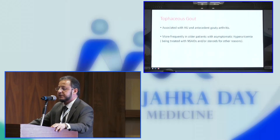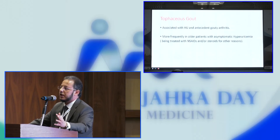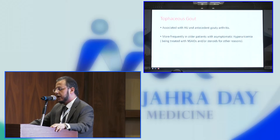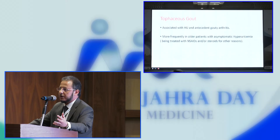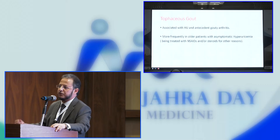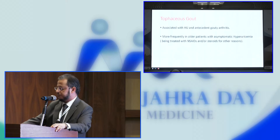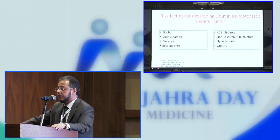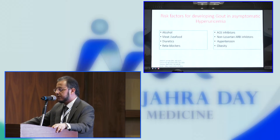Tophaceous gout is associated with hyperuricemia and antecedent gouty arthritis — basically when patients have a long period without acute gout. For some reason we don't fully understand, it is seen more in patients taking NSAIDs or steroids for other reasons, suggesting that inflammation itself may reduce tophi deposition. The known risk factors for developing gout and asymptomatic hyperuricemia include alcohol, meat and seafood, diuretics, beta-blockers, ACE inhibitors, non-losartan ARB inhibitors, hypertension, and obesity.